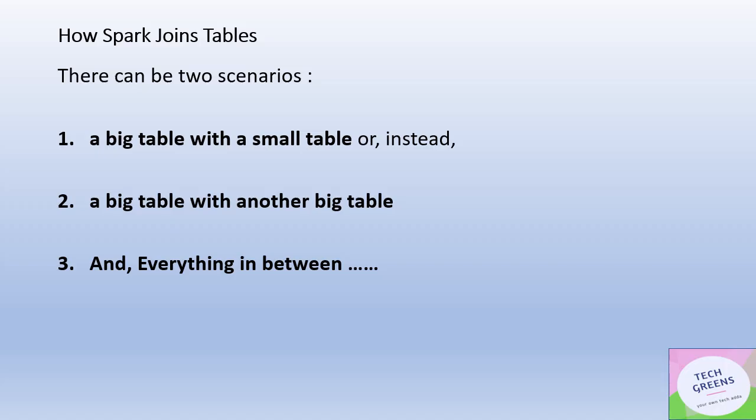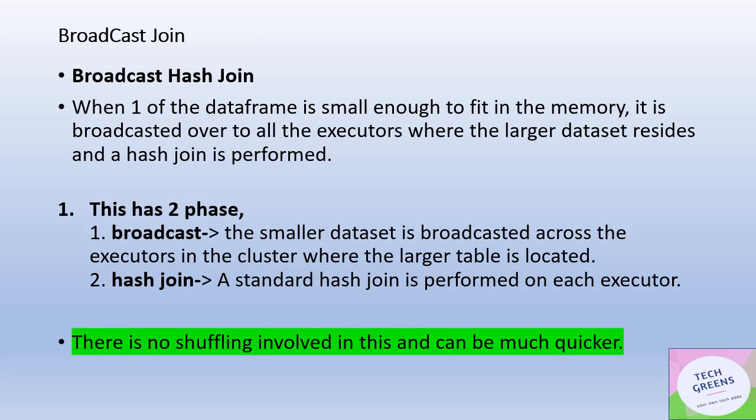When we talk about how Spark joins different tables, there are primarily two scenarios: a big table getting joined with a smaller table, or a big table getting joined with another big table. These are the two highlighted scenarios, but there's a lot in between — scenario three covers everything that falls between these two. Let's start with the broadcast join, the most well-known of the three.